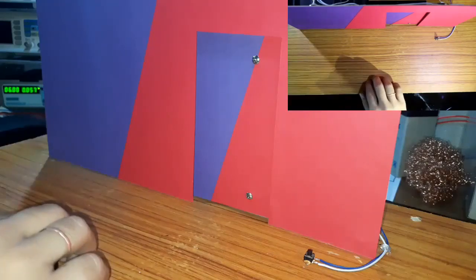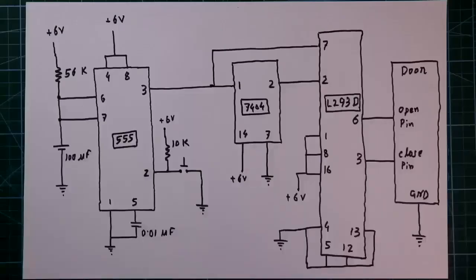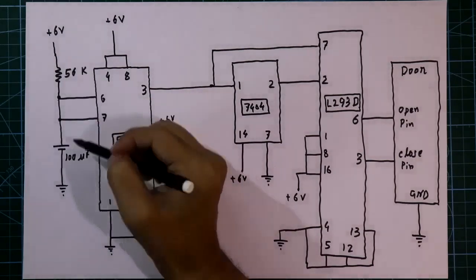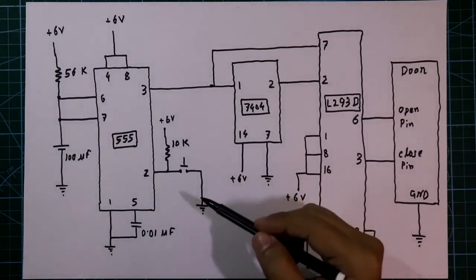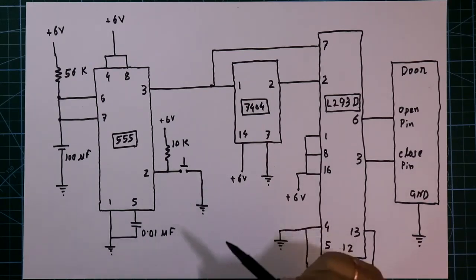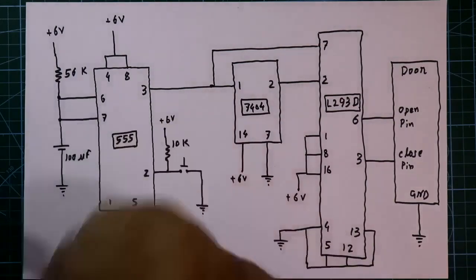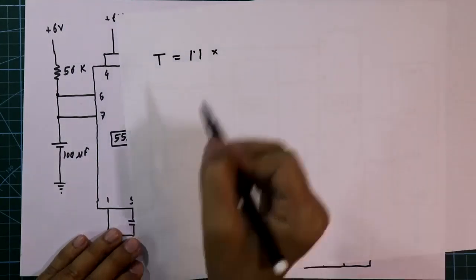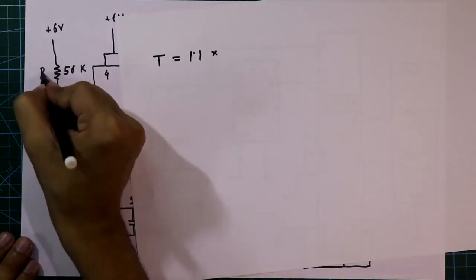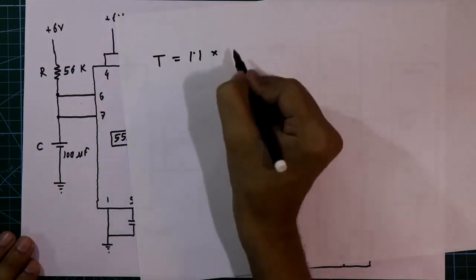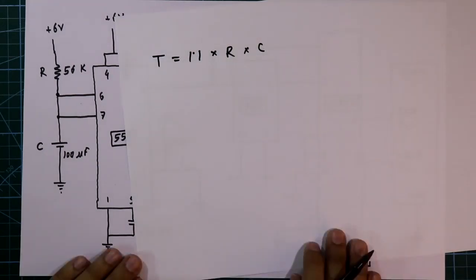Now let's see the timer calculation. To change the open timer you have to change this resistor and this capacitor — these two control the open timer. The 555 IC is connected in monostable mode (discussed in another video, link in the description). The timer formula is: T = 1.1 × R × C, where R is the resistor and C is the capacitor.